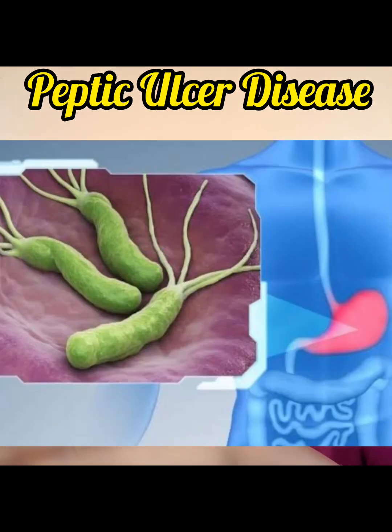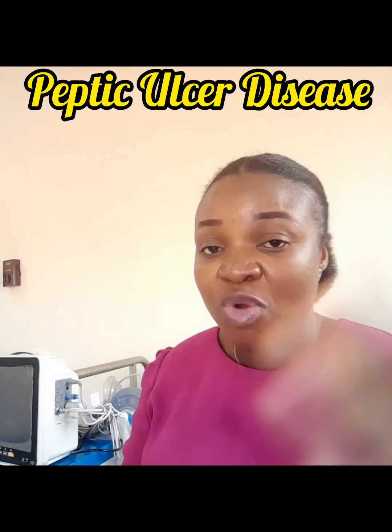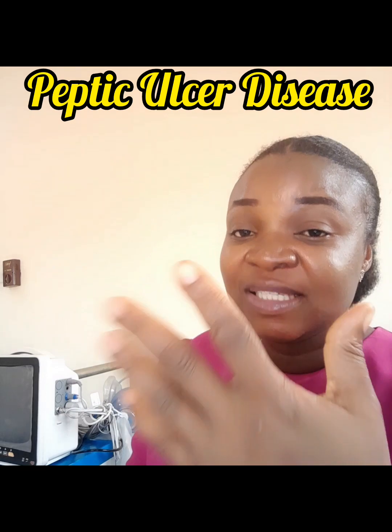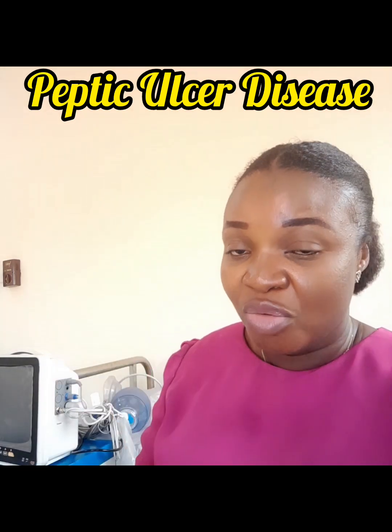H. pylori has toxins that cause inflammation around the stomach lining, making the ulcer worse. That's why when you have H. pylori infection you must be treated — otherwise the ulcer continues to increase and you may hear about complications like perforation. It also has flagella, which helps it move to the stomach and stay there. However, since it is a bacterial infection, it can be treated.